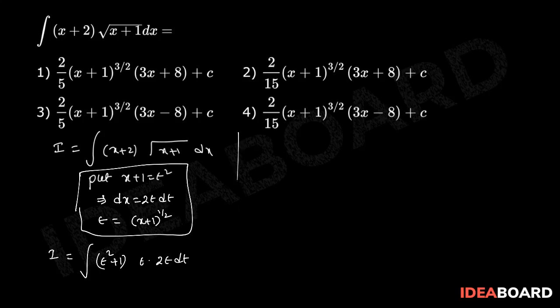Therefore I = ∫(2t⁴ + 2t²) dt. That equals 2t⁵/5 + 2t³/3 + c.